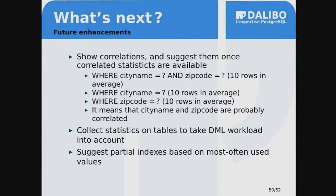Another plan — partially implemented on the collection side but not yet in the UI — is collecting statistics from pg_stat_user_tables to have DML workload statistics. This lets us weigh whether an index would be good depending on write load: if your table is almost never accessed by SELECT but constantly written to, it might not make sense to create many indexes. Also, there's currently no logic to suggest partial indexes — we provide data to make that decision easier, but you still have to look at the data and use your own judgment. It would be good if the tool could automate that decision too.